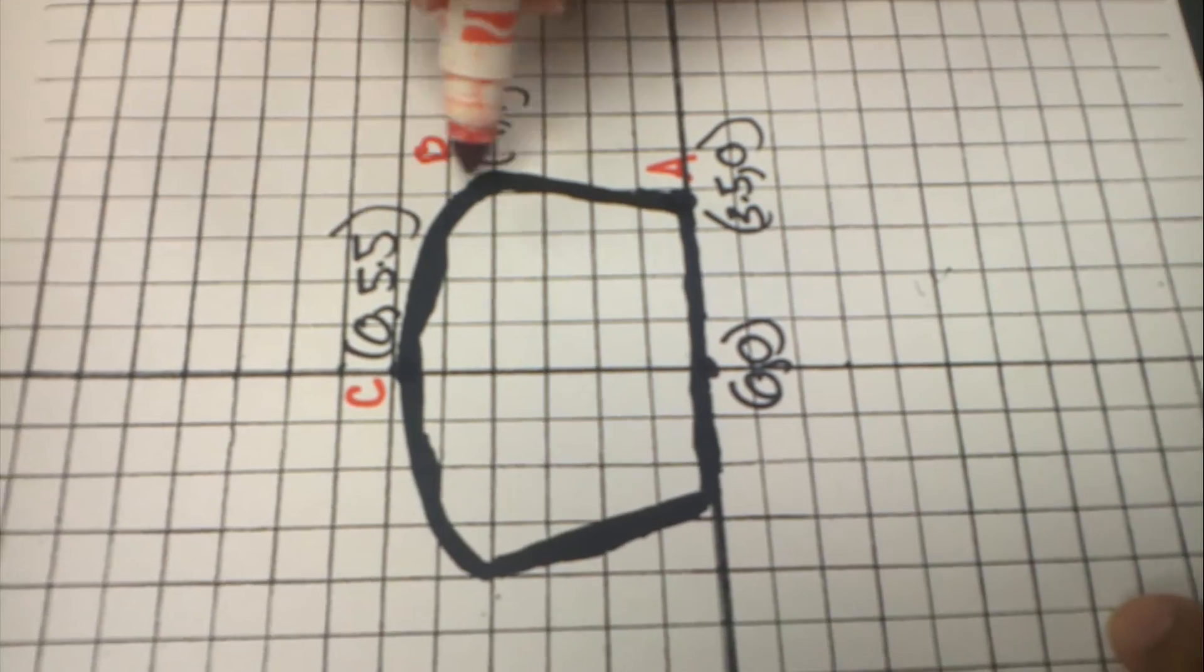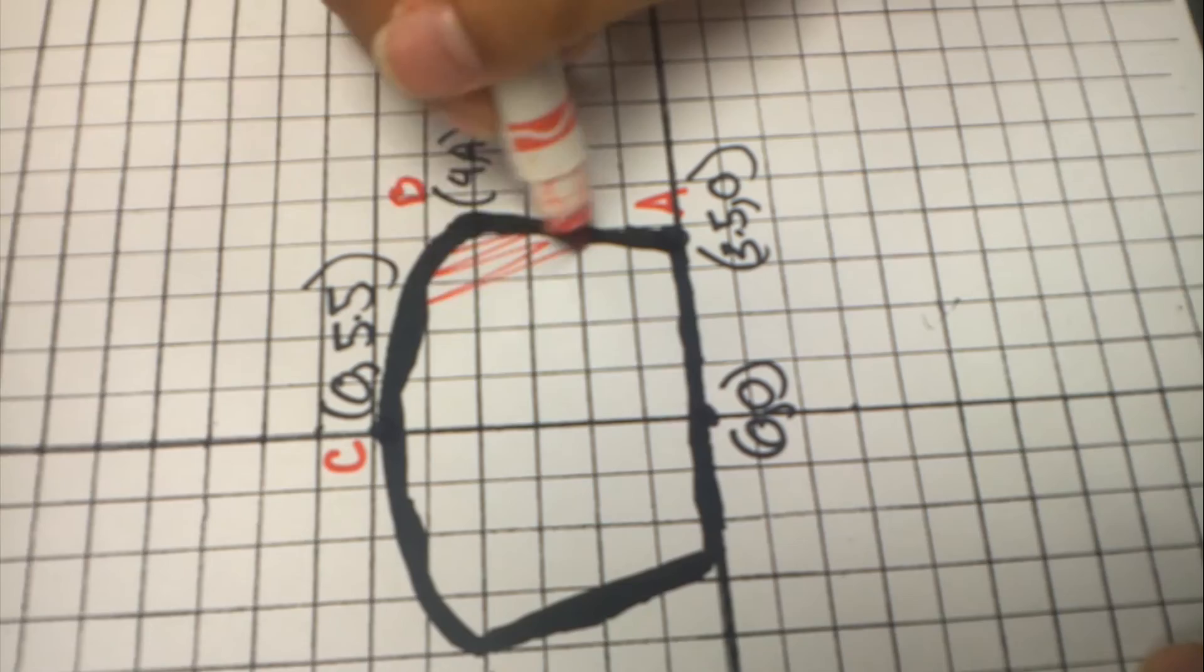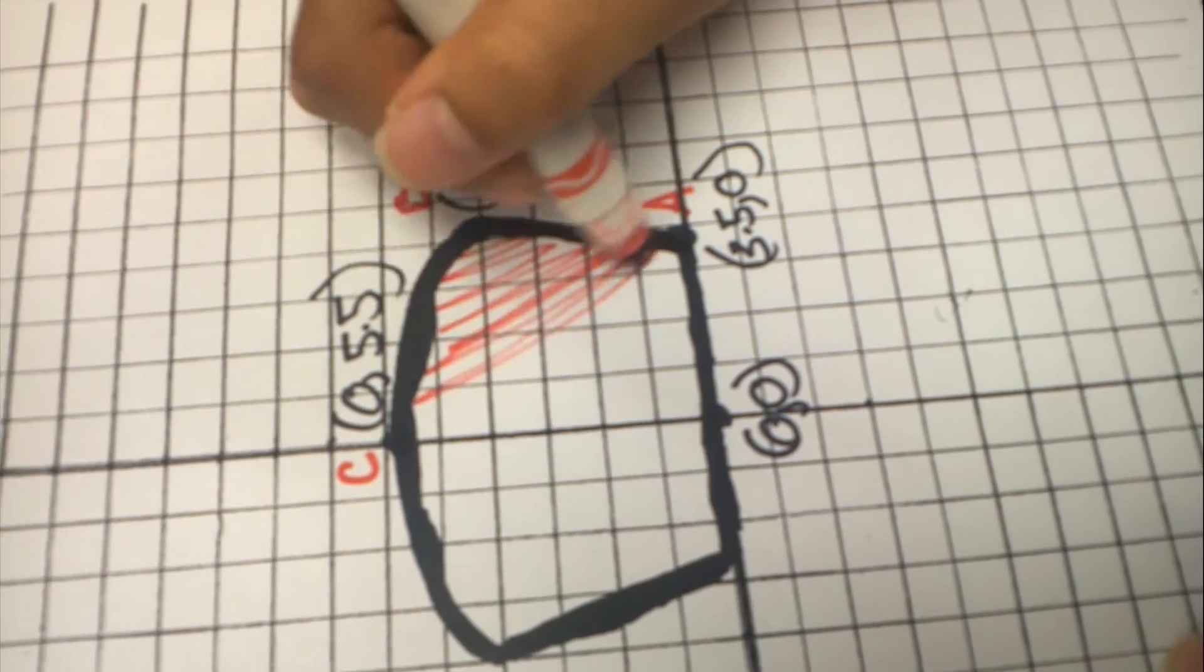But of course, the reason why we're doing this is because we need to spin this area around the y-axis.